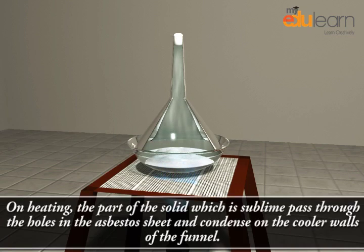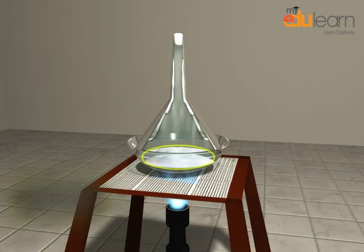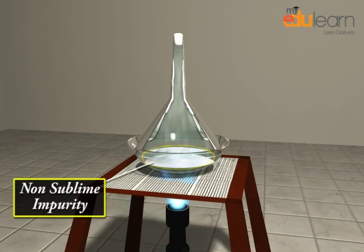On heating, the part of the solid which sublimes passes through the holes in the asbestos sheet and condenses on the cooler walls of the funnel. The non-sublimable impurity is left in the dish.